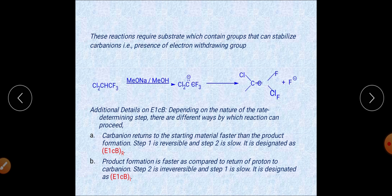In the second case of E1cb, product formation is faster — the carbanion formed during the reaction is rapidly converted into the product. Return of the carbanion to the substrate is not easy. Step two is irreversible and step one is slow. This is called E1cbI.